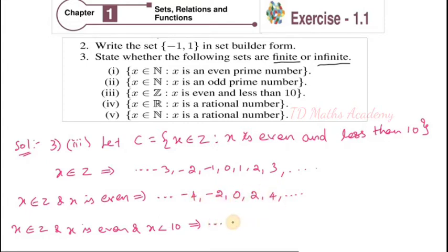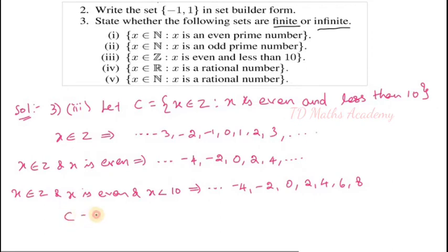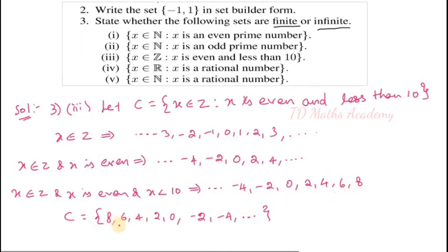Therefore the answer is: dot dot dot, -4, -2, 0, 2, 4, 6, 8. Up to 8, because x less than 10 and 8 is the largest even number less than 10. So all these numbers form the given set. Writing the final answer: C = {8, 6, 4, 2, 0, -2, -4, dot dot dot}. Therefore C is not a finite set — C is an infinite set.